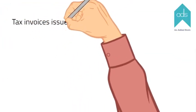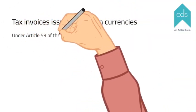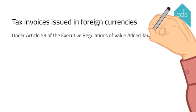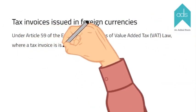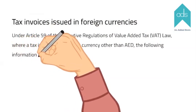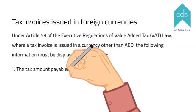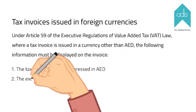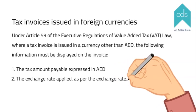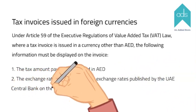Tax invoices issued in foreign currencies: Under Article 59 of the Executive Regulations of Value-Added Tax law, where a tax invoice is issued in a currency other than AED, the following information must be displayed on the invoice: the tax amount payable expressed in AED, and the exchange rate applied as per the exchange rates published by the UAE Central Bank on the date of supply.